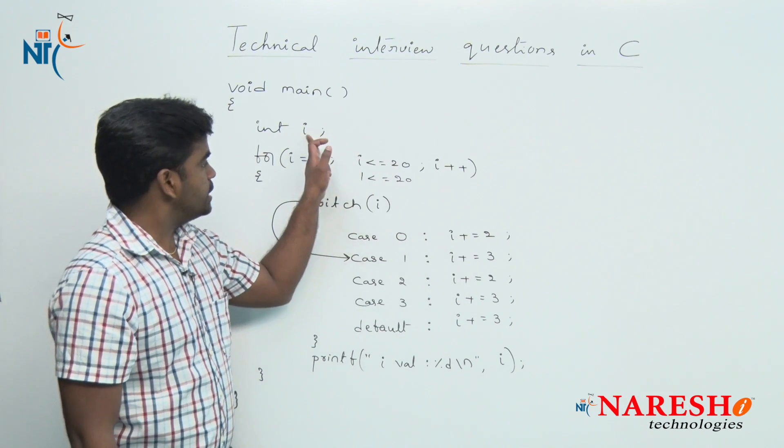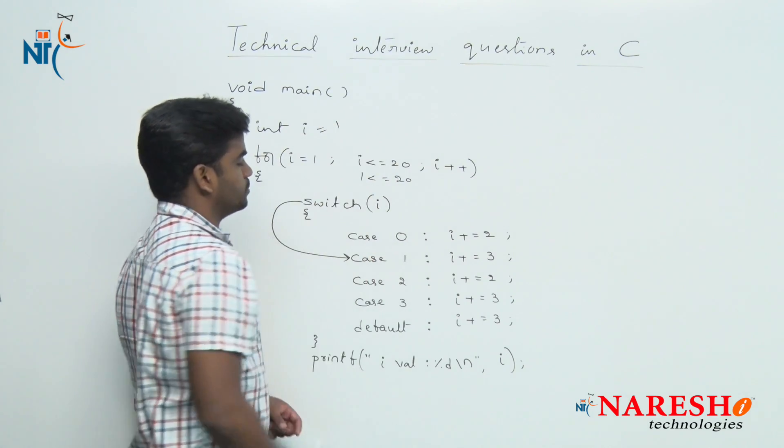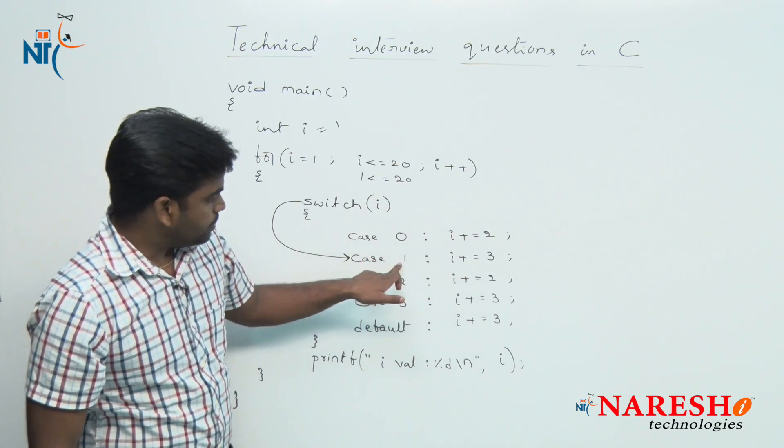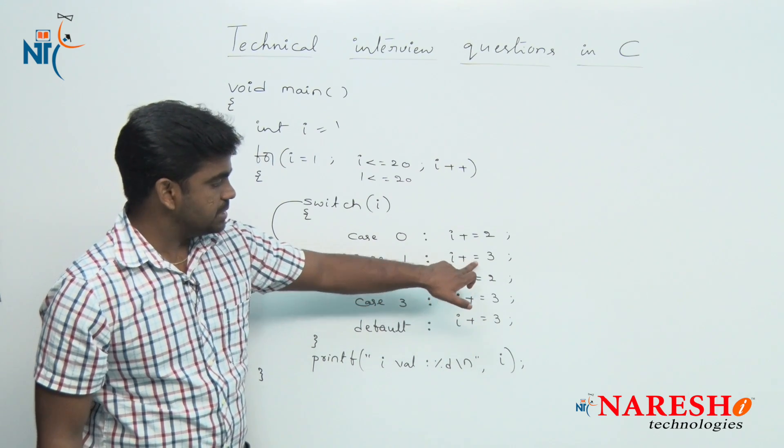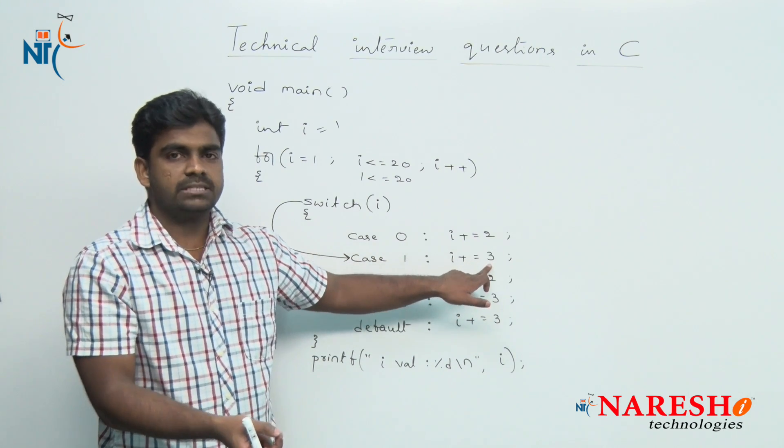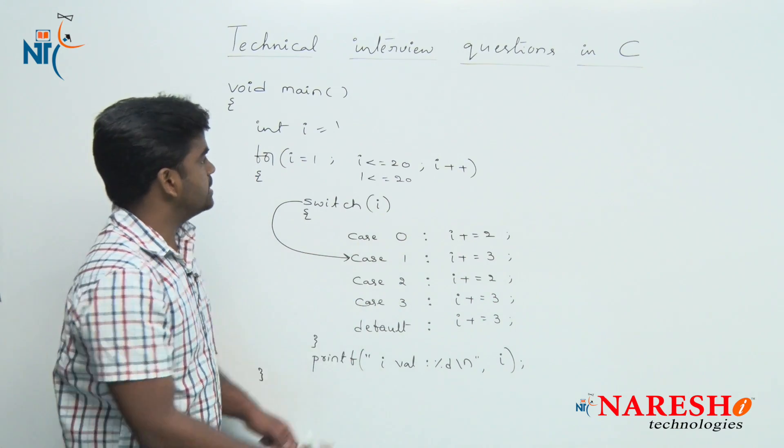Now here initially i value is 1. From case 1, all the things will be executed. All the expressions: i plus equals 3 is nothing but compound assignment operator, i equals i plus 3. Here the value becomes 4.